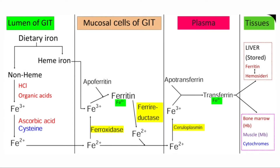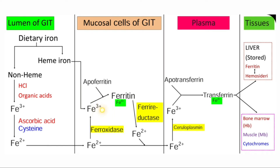Now, coming to events that take place in the intestinal mucosal cell — what happens to the iron that entered from the lumen? The ferrous form of iron that enters the intestinal mucosal cell is converted into the ferric form by ferroxidase. Within the intestinal mucosal cells, this iron may either be stored or transported and exported out into the plasma. The ferric form of iron combines with apoferritin to form ferritin.